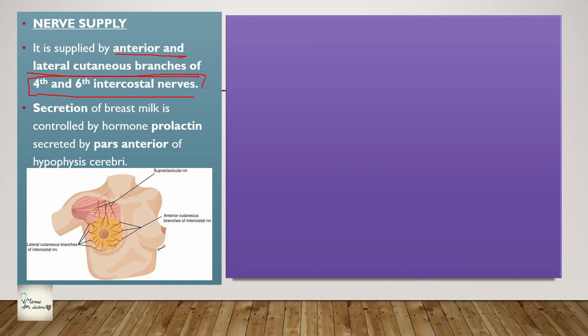Once you come to the thorax section also, it is very important to know about the intercostal nerves. The secretion of breast milk is controlled by the hormone prolactin, which will be covered in physiology, and it is secreted by the anterior part of the hypophysis cerebri. Here you can see the supraclavicular nerves, the lateral cutaneous branches of the intercostal nerves, and the anterior cutaneous branches of the intercostal nerves - these three provide the nerve supply.